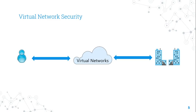Virtual networks are made up of subnets. A subnet is a range of IP addresses within your virtual network. Like virtual networks, subnets are scoped to a single Azure region. You can implement multiple virtual networks within each Azure subscription and Azure region.